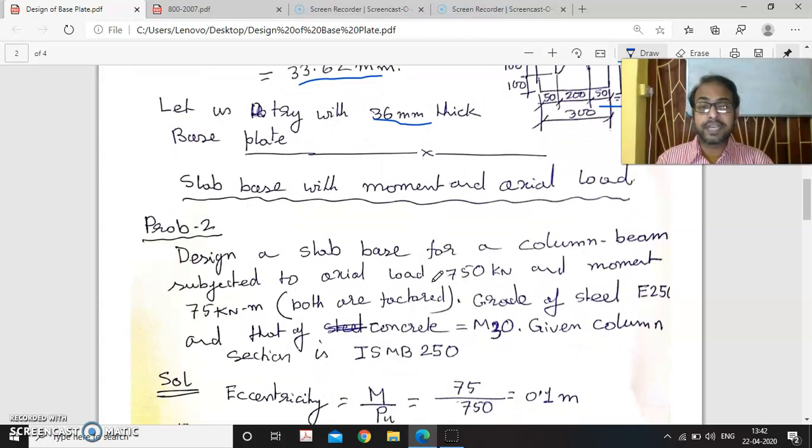Now we will go to the second problem, where we will see we have axial load along with a moment. So we have said that this is a beam column. The grade of the concrete is here higher, M30, but steel is of same grade. And we have considered a column section ISMB 250.